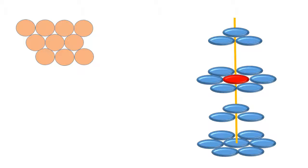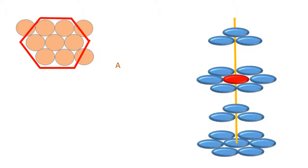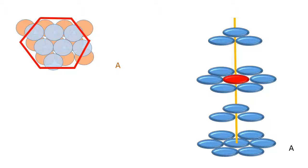So, in a close packed structure — AB-AB type of arrangement — we have the A layer and now draw a hexagon. Focusing on the hexagon, I see that there are 7 spheres inside the hexagon and I name it as an A layer. Let us place a blue colored sphere above the triangular void having the apex upwards. When I place the first layer, I see that all the triangular voids having the apex upwards are filled up.